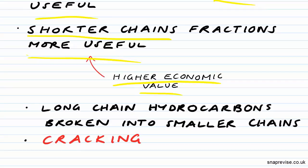So in order to boost our profits or do something with the long chain hydrocarbons that we don't really have that much of a use for, we can break the long chain hydrocarbons down into smaller chains and this is done through a process called cracking.